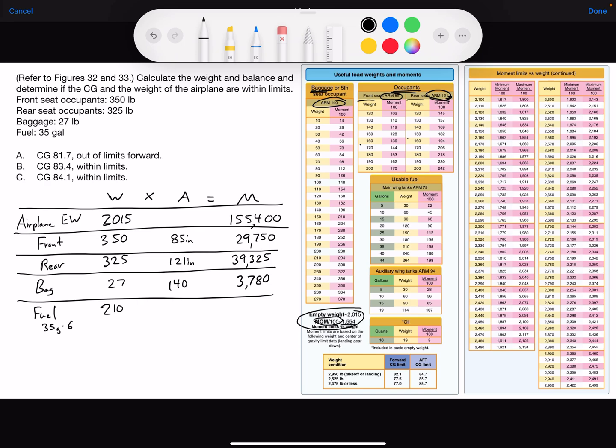Fuel, 210 pounds. We go to fuel, main tank. And here we can find 35 gallons. And it has a weight of 210, which is what we have. And a moment in hundreds of 158.